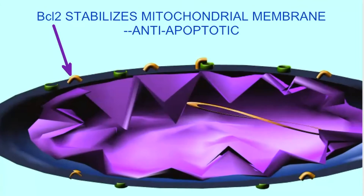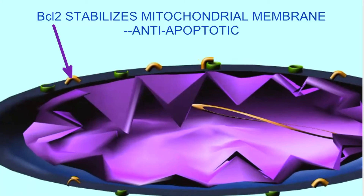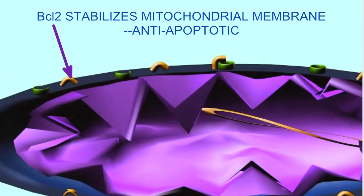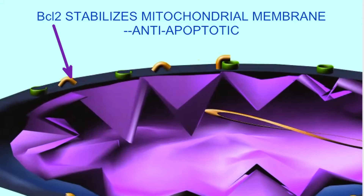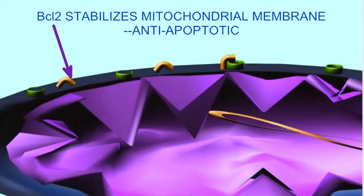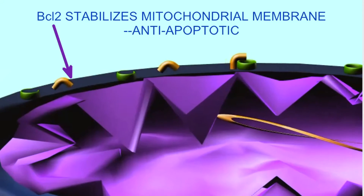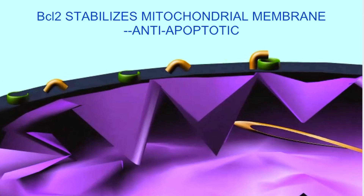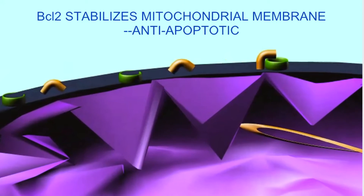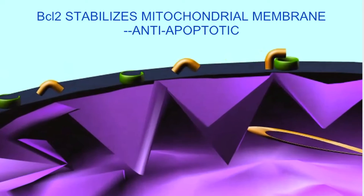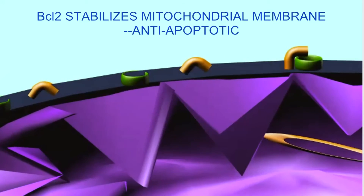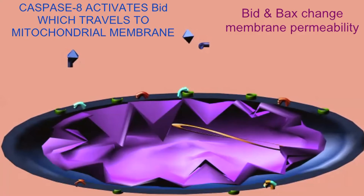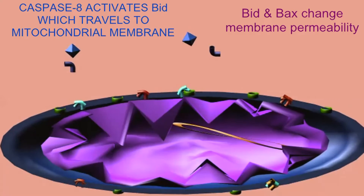Caspase enzymes have effects on the permeability of the mitochondrial membrane through members of the BCL2 gene family. Some members of this family, such as BCL2, oppose apoptosis — they are anti-apoptotic — and they stabilize the mitochondrial membrane, preventing the release of cytochrome C.